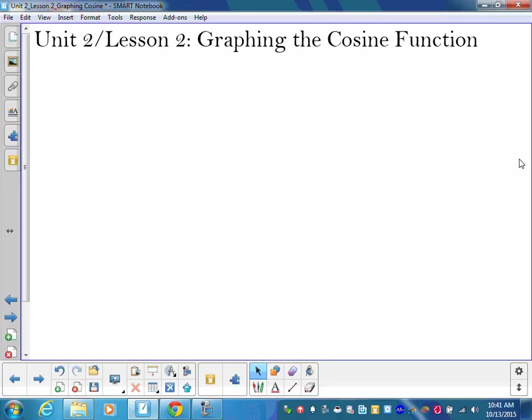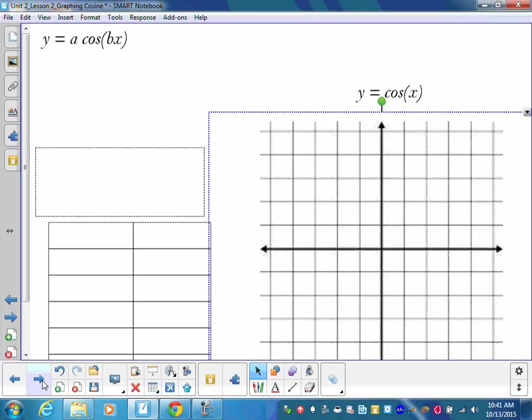So the only difference for cosine is going to be the y-value. That's it. We find the period the same way. We do the amplitude the same way. The only difference is going to be the original y-value. And obviously when you graph it, it's going to look a little different.